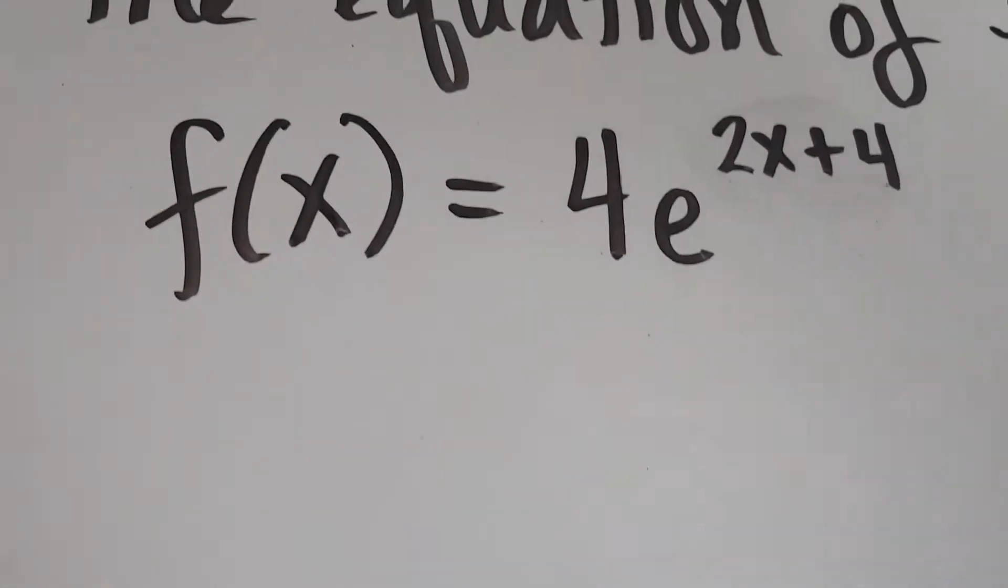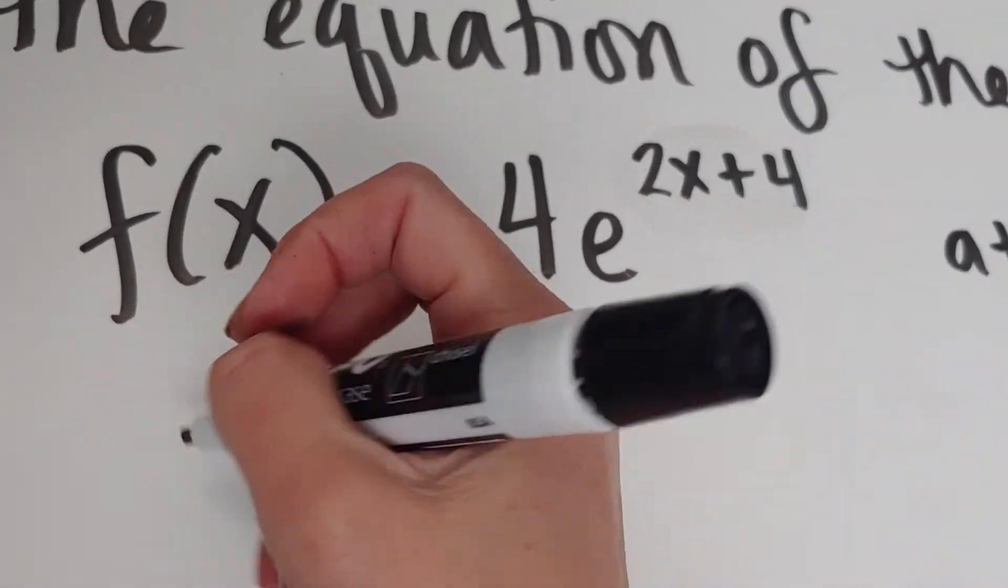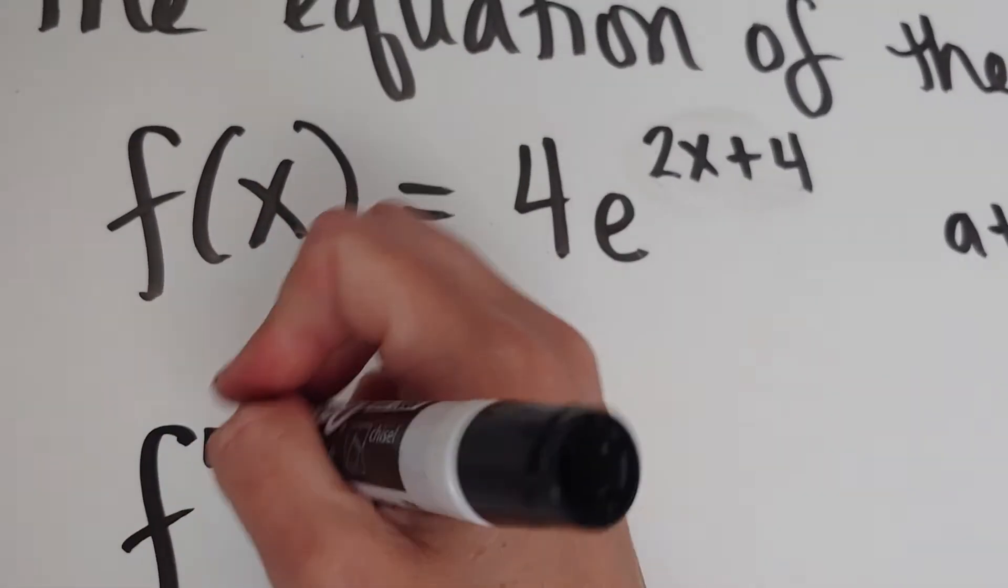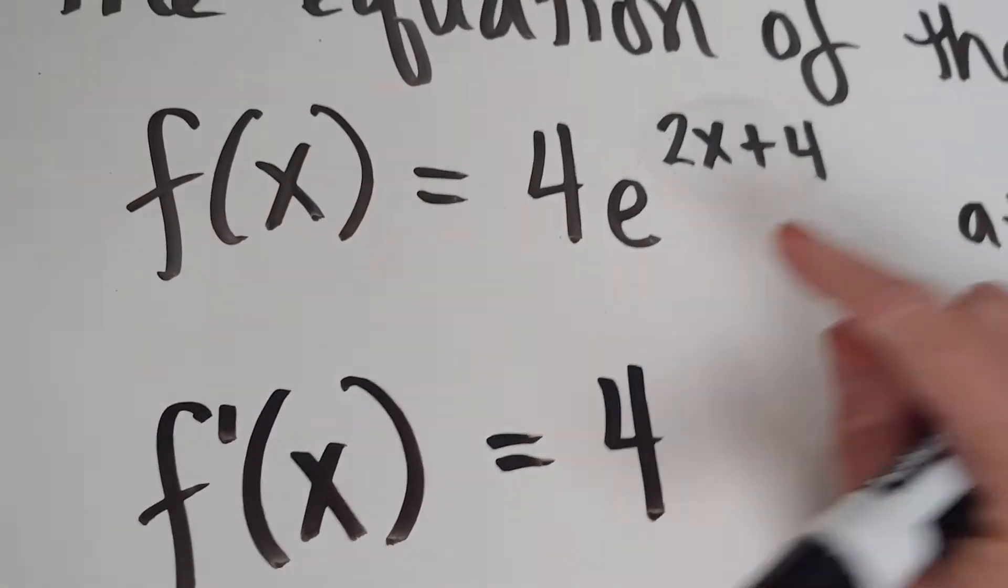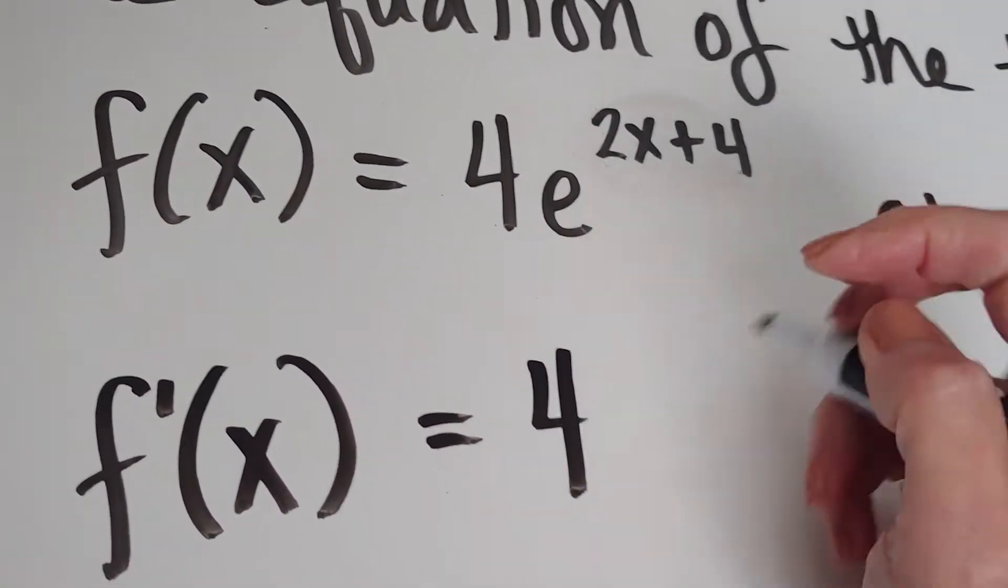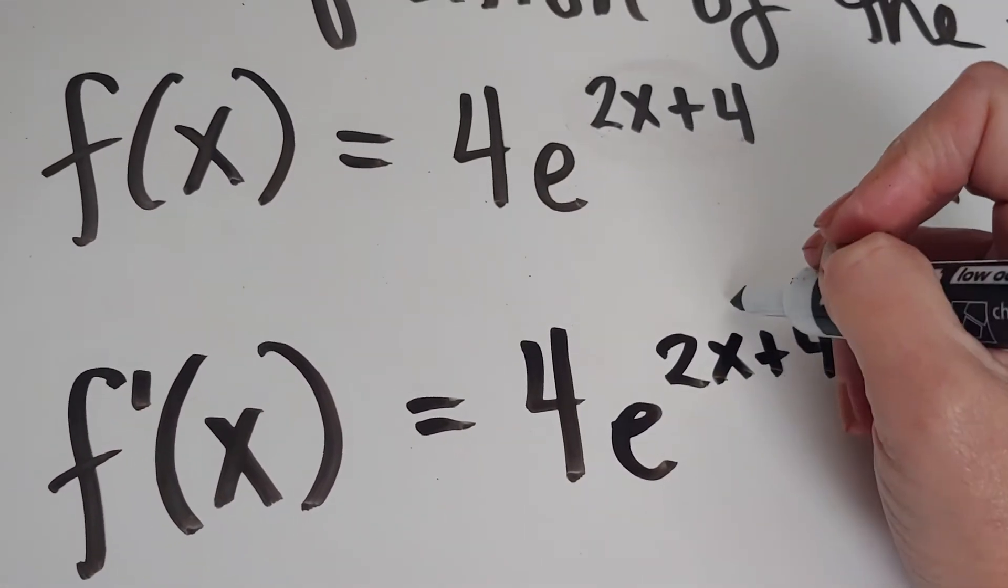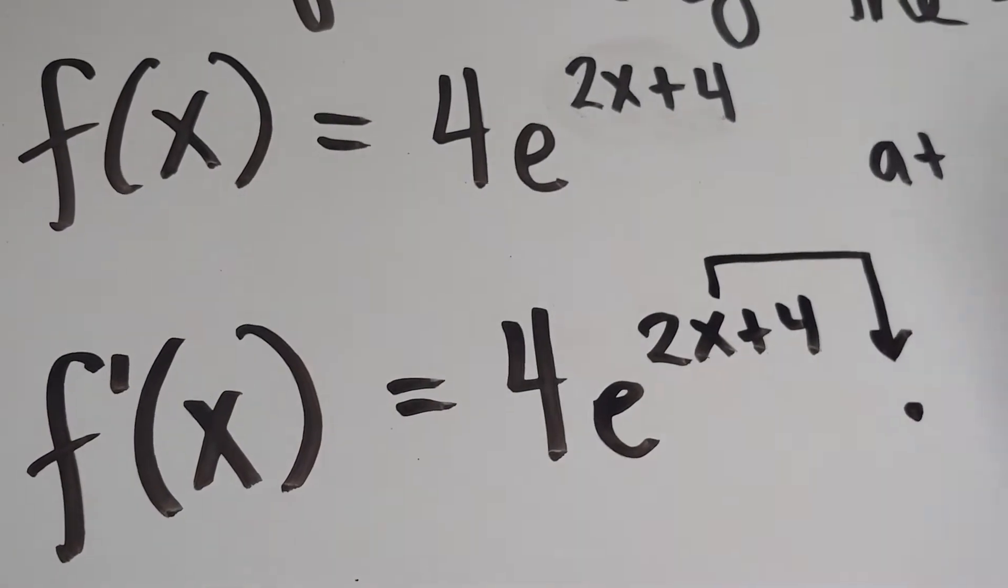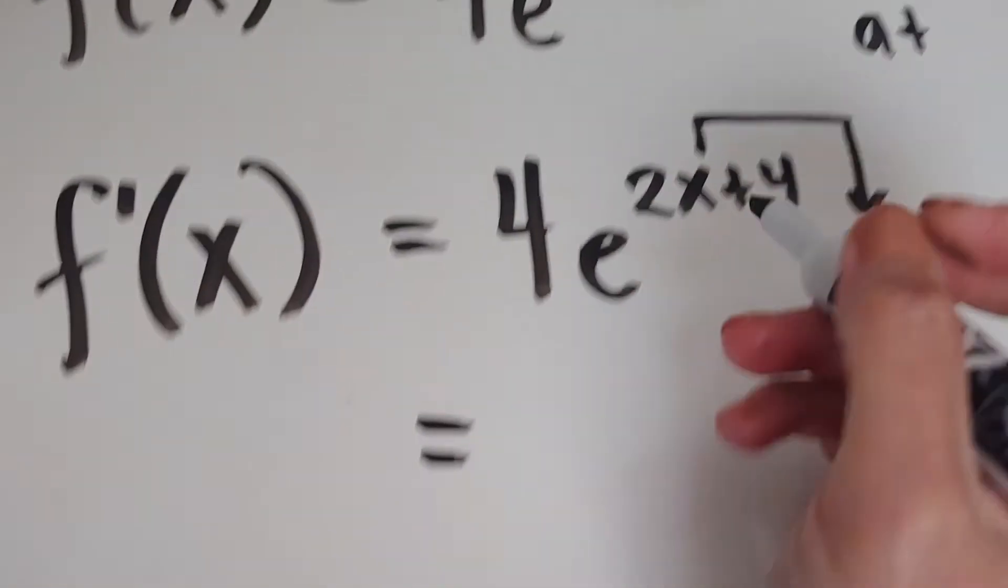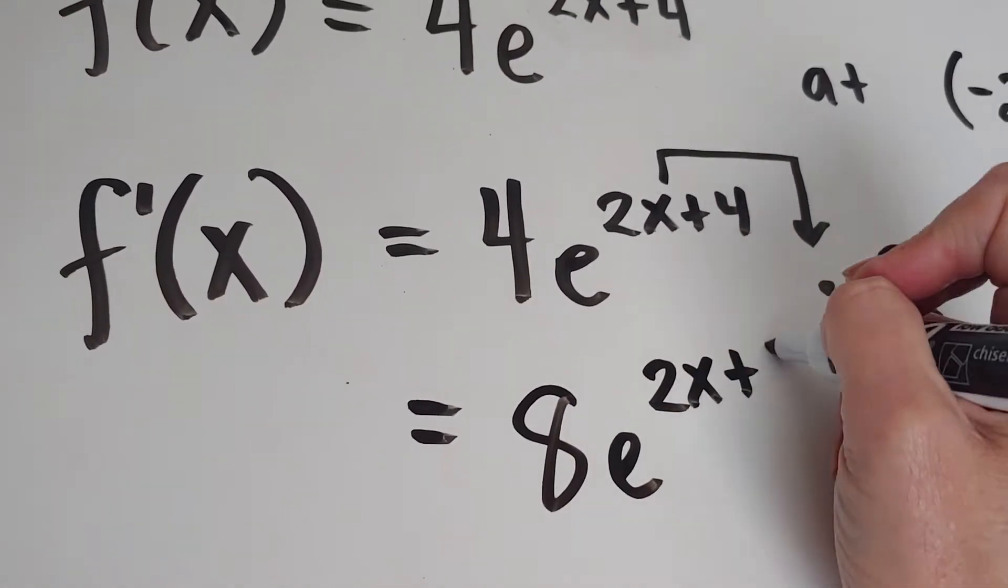So the first step I need to do is I need the derivative of 4e to the 2x plus 4. So the derivative would be 4. The derivative of e to the 2x plus 4 is itself times the derivative of the exponent. So the derivative of 2x plus 4 is 2. So my derivative is going to be 8e to the 2x plus 4.